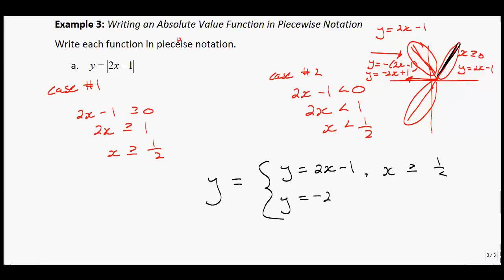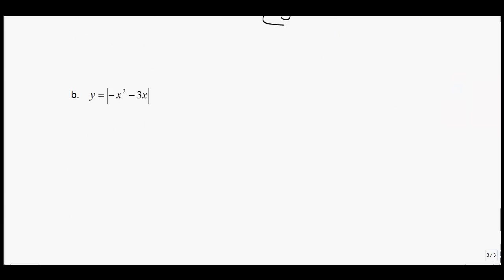And it's equal to y equals negative 2x plus 1 when x is less than 1/2. So when x is less than 1/2, basically this direction, we get the graph that looks like so. Okay, let's try the next one.